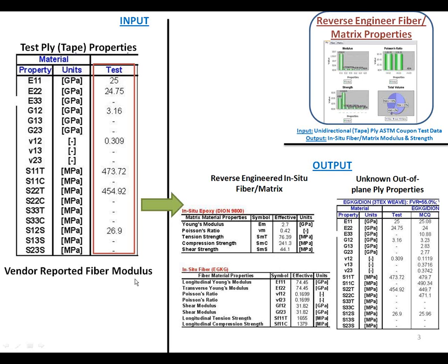You can find the fiber modulus from web links for different vendors, for example DORE. On the right-hand side is an example of what comes out of this analysis: in-situ epoxy properties and in-situ fiber properties. You also get unknown out-of-plane properties that you can predict as well. With this, I will go to the MCQ Composite module and show you how it looks.